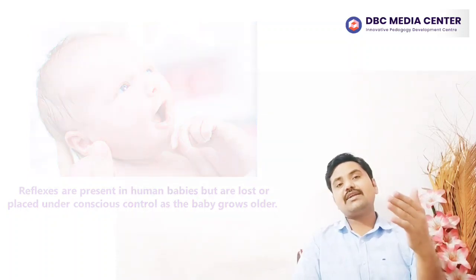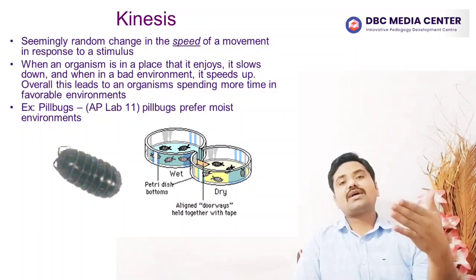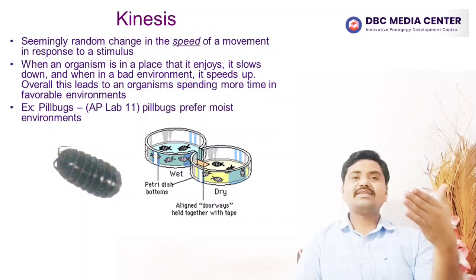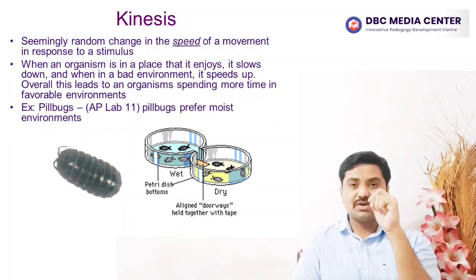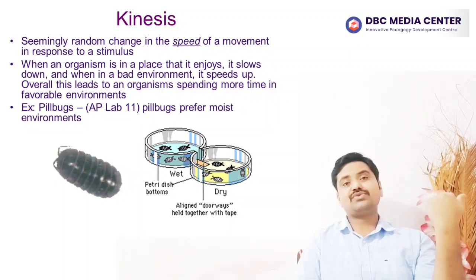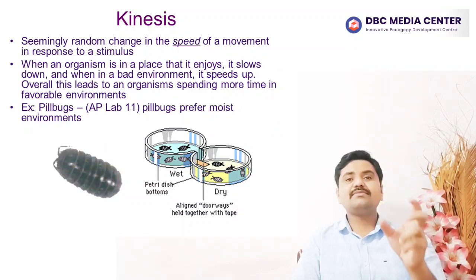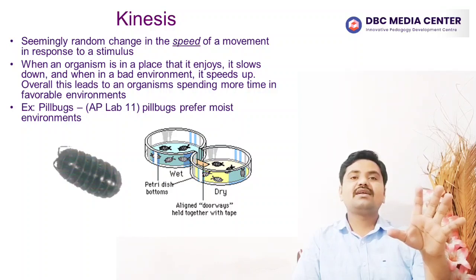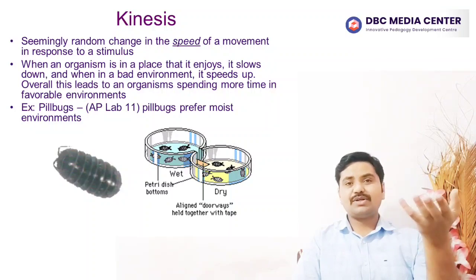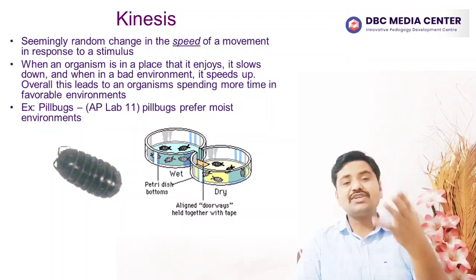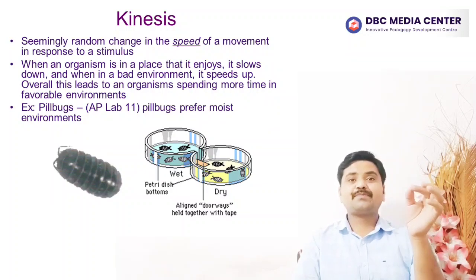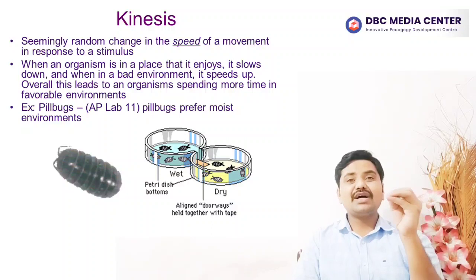Another type of innate behavior is kinases or taxis. Kinases and taxis are innate behaviors in which an organism changes its movement in response to a particular cue or stimulus, such as higher temperature or a food source. In the case of kinases, an organism changes its movement in a non-directional way — for example, speeding up or slowing down. Wood lice move faster in response to temperatures that are higher or lower than their preferred range. The movement is random, but the higher speed increases the chance that the wood louse will move out of the bad environment.